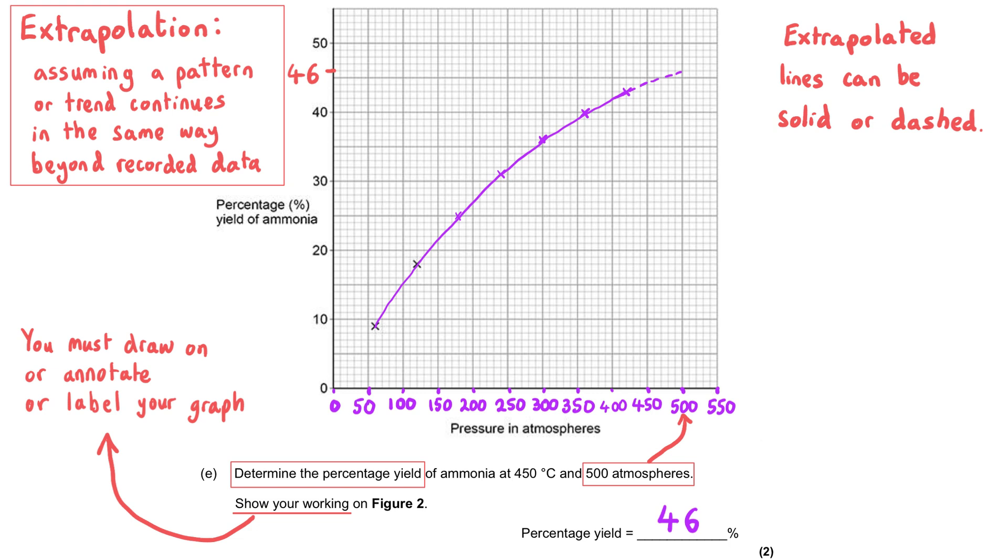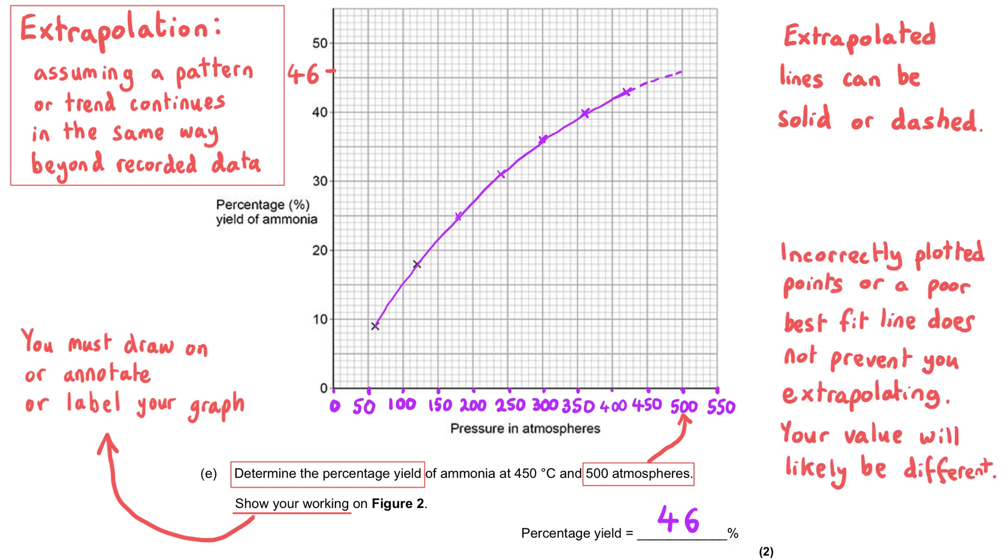If you extrapolated your line badly and you got a different number, you would get some credit for correctly reading off your poorly extrapolated line. Depending on how you plotted your points earlier, this will also affect your best fit line, which will affect your extrapolation, which will affect your percentage. As a result of this, there's probably going to be a range of acceptable answers, perhaps between 45 and 47, or maybe even beyond, depending on the quality of the line that you drew earlier.